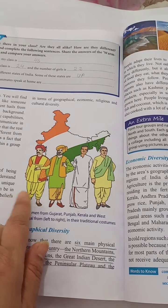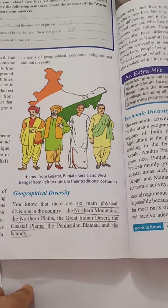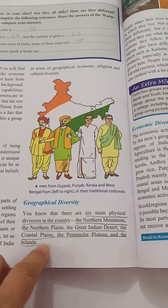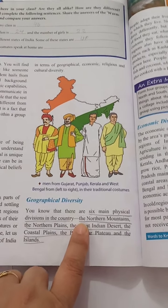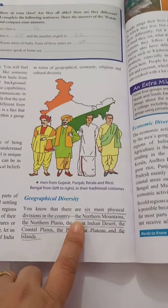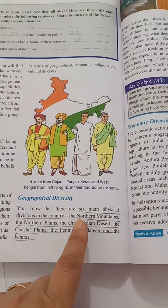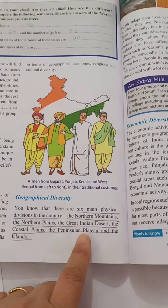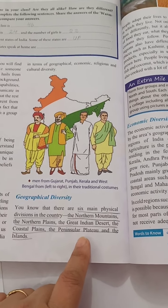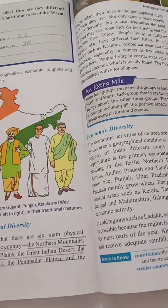India also has islands on both sides: the Andaman and Nicobar Islands and the Lakshadweep Islands. So these are the six main physical divisions. Because of this, the soil is also different, and because of the soil, the crops are different. The people living in these areas are also different in their activities — like farming, rearing of animals, and fishing.